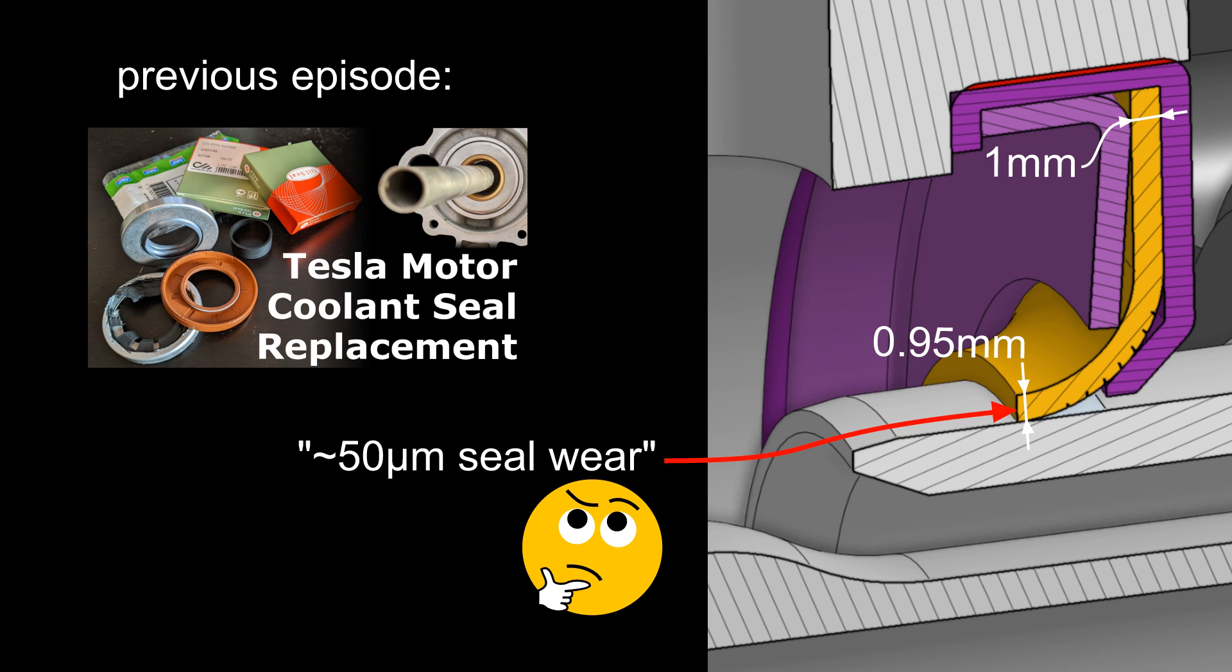I assumed an initial uniform 1 millimeter lip thickness so that the lower thickness could be fully attributed to wear. However, it seems more likely that the thickness of the lip contact area immediately after manufacturing is actually already lower to begin with, because a typical manufacturing process of PTFE rotary shaft seal lips has the following steps.